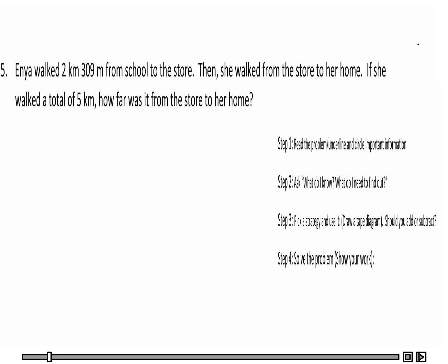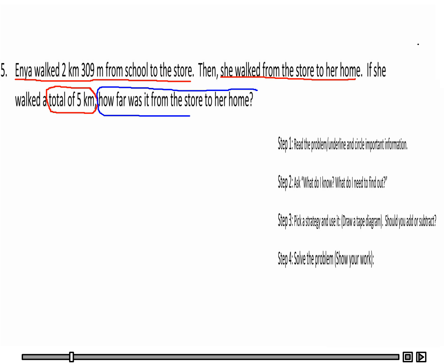Next we need to underline and circle important information. The first important piece is that Inya walked 2 kilometers 309 meters from school to the store. The second is that she walked from the store to her home. And she walked a total of 5 kilometers — I'm going to circle this because it tells me the total distance. I'm also going to circle the question: how far was it from the store to her home?